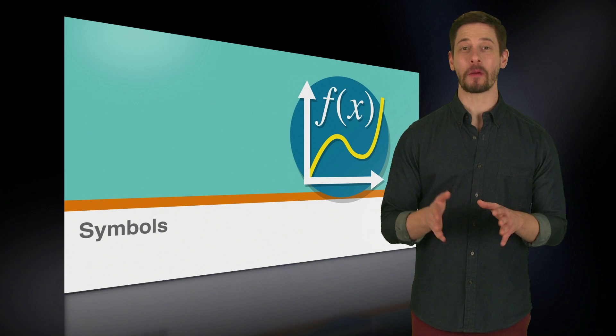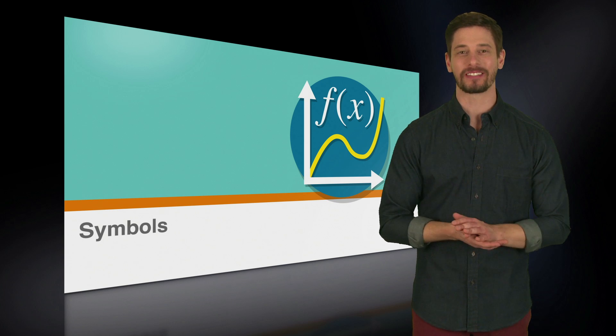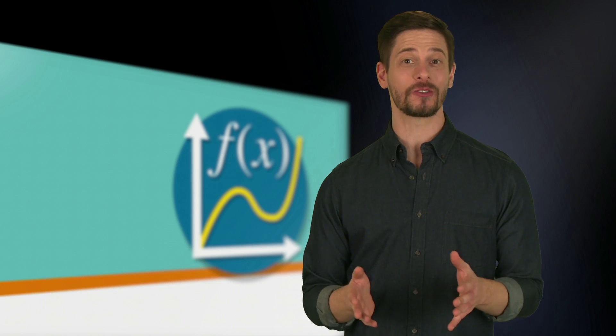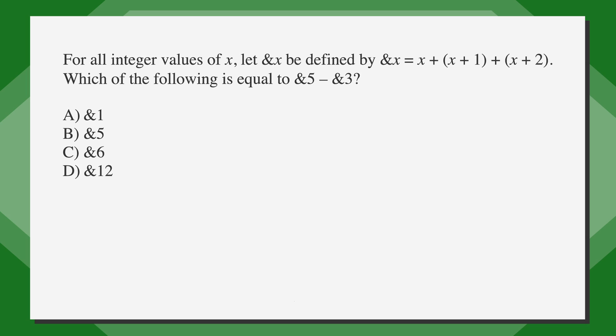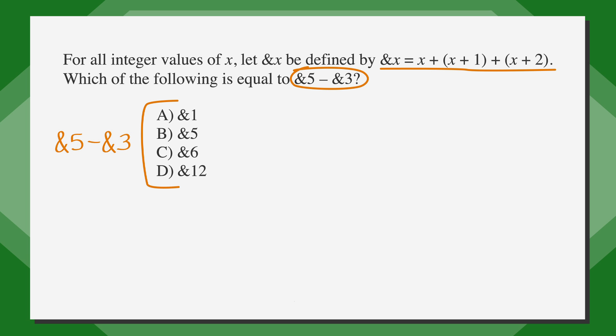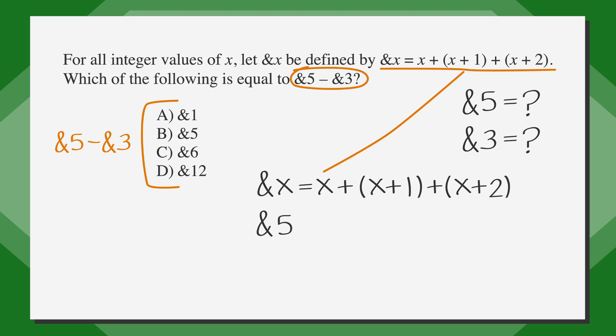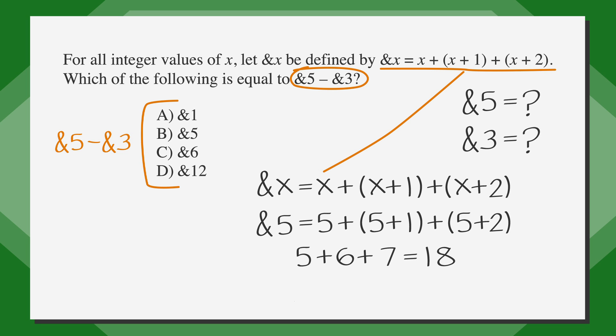Treating problems with symbols like picking numbers problems really does simplify the process, as we just experienced in our example. Let's work through a trickier problem now, where the answer choices also include symbols. For all integer values of x, let ampersand-x be defined by: ampersand-x equals x plus (x plus 1) plus (x plus 2). Which of the following is equal to ampersand-5 minus ampersand-3? We'll underline the facts, circle the keywords, and label the answer choices. To solve this, we need to calculate both ampersand-5 and ampersand-3 and then subtract the two. To find the value of ampersand-5, we replace x with 5, giving us 5 plus 6 plus 7, which equals 18.